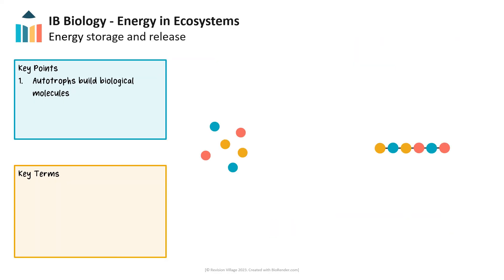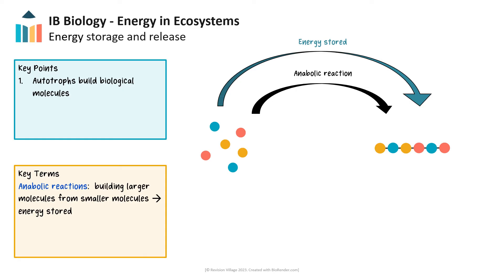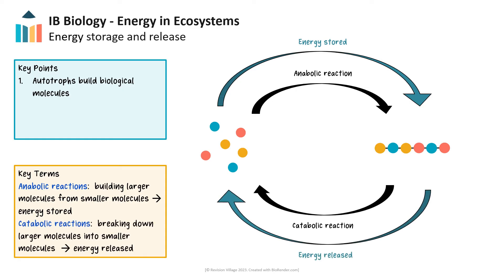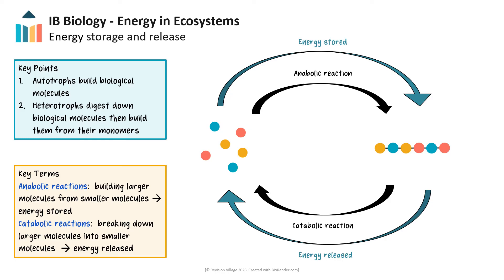Let's take a closer look at how biological molecules can both store and release chemical energy. Autotrophs build biological molecules in anabolic reactions and may break some of them down in catabolic reactions for their metabolism. Heterotrophs consume biological molecules and break them down into their monomers or building blocks, such as nucleotides or amino acids. These monomers are then used to construct their own biological molecules. For instance, if you have a salad for lunch, you will consume lettuce protein. Your digestive system will break down the lettuce protein into amino acids and deliver them to your cells, where those building blocks will be used to construct human protein, which can then build more human cells as you grow or replace damaged tissues.